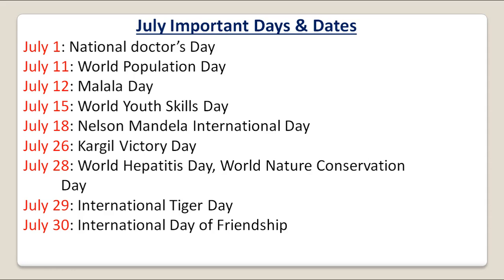On 1st of July we celebrate National Doctors' Day. 11th of July is celebrated as World Population Day. On 12th of July we celebrate Malala Day. Malala Yusuf Jai had got the Nobel Prize in 2014 with Kailash Satyarthi, and Malala Yusuf Jai is from Pakistan. On 15th of July we celebrate World Youth Skills Day. 18th of July is celebrated as Nelson Mandela International Day. On 26th of July we celebrate Kargil Victory Day. 28th of July is celebrated as World Hepatitis Day and World Nature Conservation Day. On 29th of July we celebrate International Tiger Day. And on 30th of July we celebrate International Day of Friendship.